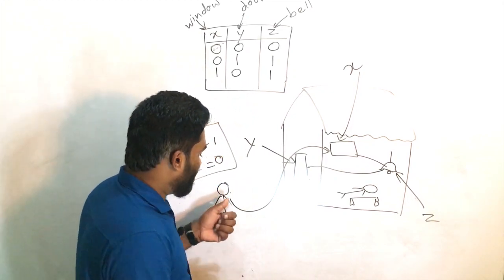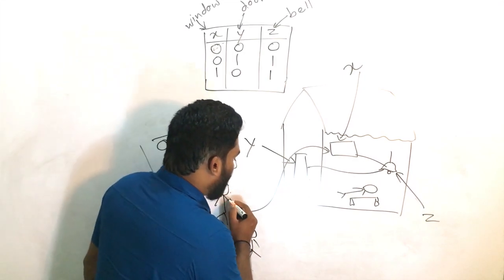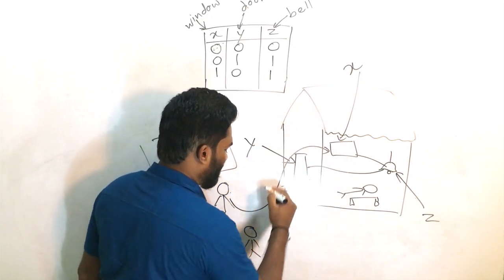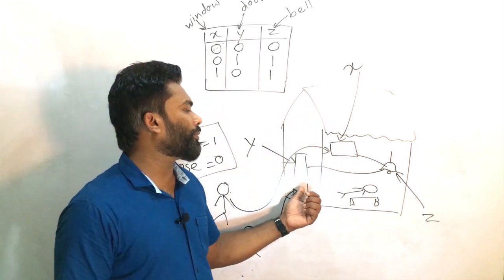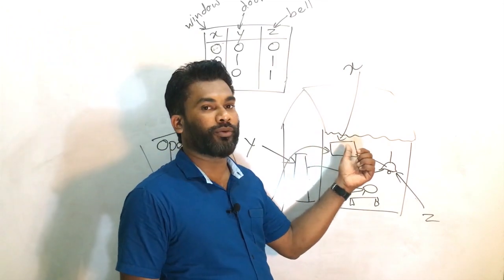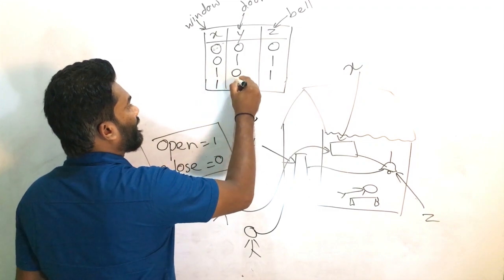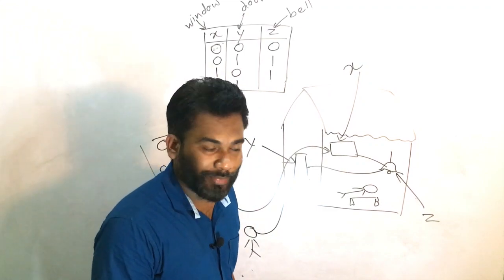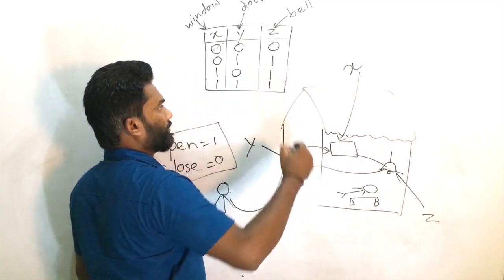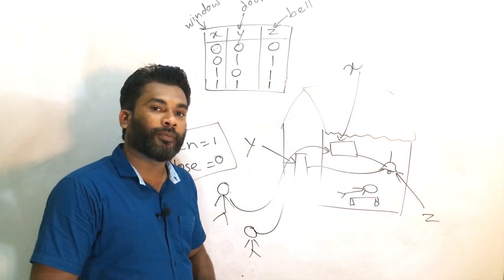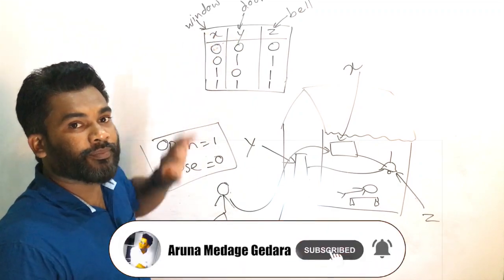One more day this man comes with his friend. One tries to open the door and the other tries to open the window — both the window and door are opened. Then the bell is ringing. Now you can see this complete table.